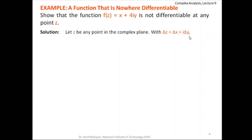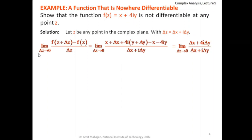Let z be any point in the complex plane, and any change in z is denoted by Δz = Δx + i·Δy. We have to find the limit as Δz → 0 of [f(z + Δz) − f(z)] / Δz. Since f(z) = x + 4iy, we have f(z + Δz) = (x + Δx) + 4i(y + Δy). Subtracting f(z) and simplifying, the x and 4iy terms cancel, leaving (Δx + 4i·Δy) in the numerator and (Δx + i·Δy) in the denominator.